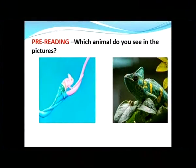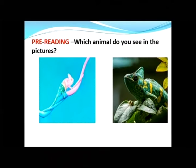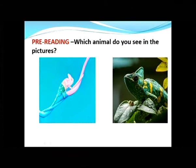Look at these pictures on the screen and try to identify them. Have you ever seen these pictures in your real life, or this animal? Notice in the first picture how the color of this animal matches with the branch, and here the color matches with the leaves. Yes, I hope you have guessed — in the mother tongue it's called 'girgit'.